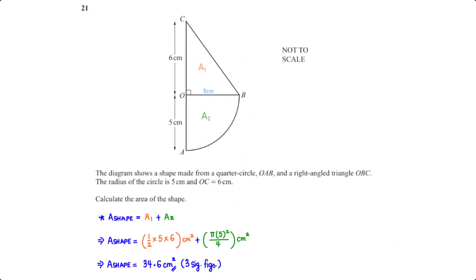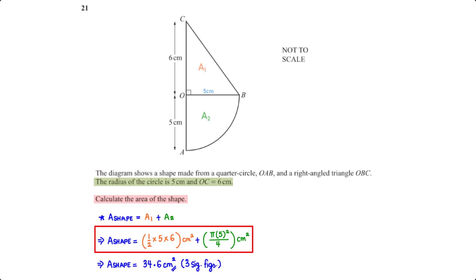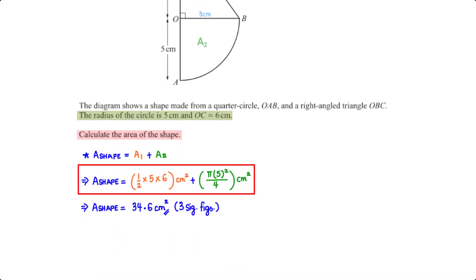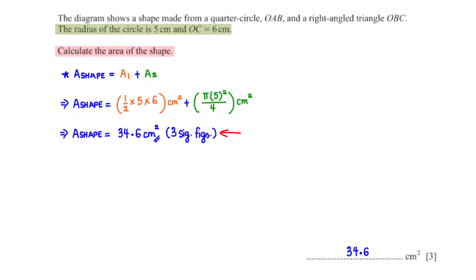The diagram shows a shape made from a quarter circle OAB and a right-angled triangle OBC. The radius of the circle is 5 cm and OC equals 6 cm. Calculate the area of the shape. The total area equals the area of the right-angled triangle (A1) plus the area of the quadrant (A2). A1 is half base times height: half times 5 times 6. A2 is pi r squared over 4 with r = 5. When we type this into the calculator, we get 34.6 cm squared rounded to 3 significant figures.